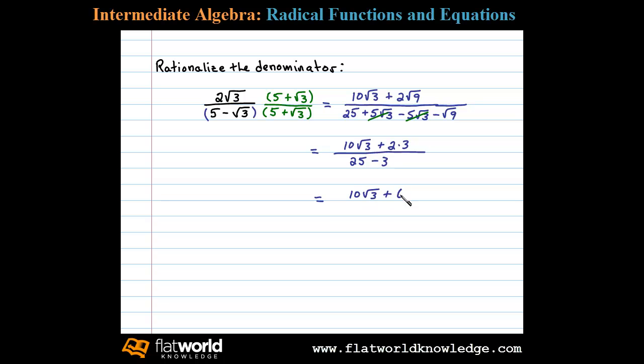Simplifying further, we have 10 square root of 3 plus 6 divided by 22. Now at this point I notice that there is a GCF in the numerator and that is 2.